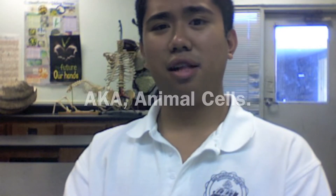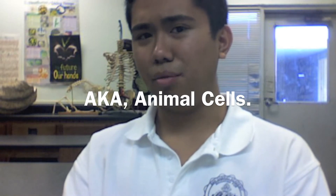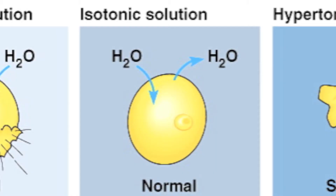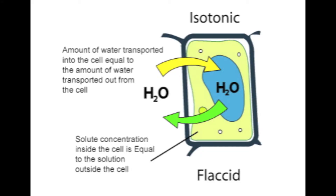Now let's take a look at what happens when we place a cell without walls in these types of environments. In an isotonic environment, a cell immersed in this will have no net movement of water. That means the rate flowing into the cell is the same as the rate flowing out.